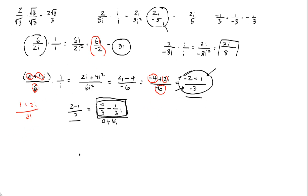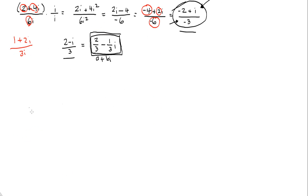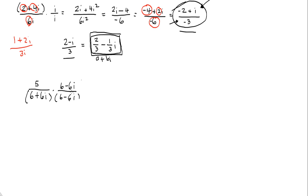Now we're going to get a bit complicated: what if you have a binomial in the denominator? You should remember this from when we did radicals. What if I have 5 over 6 plus 6i? When we had radicals and two terms in the denominator, we multiplied by the conjugate — the exact same two terms with the sign between them changed. So we're going to do the same thing with complex numbers, multiplying by the complex conjugate of our denominator.